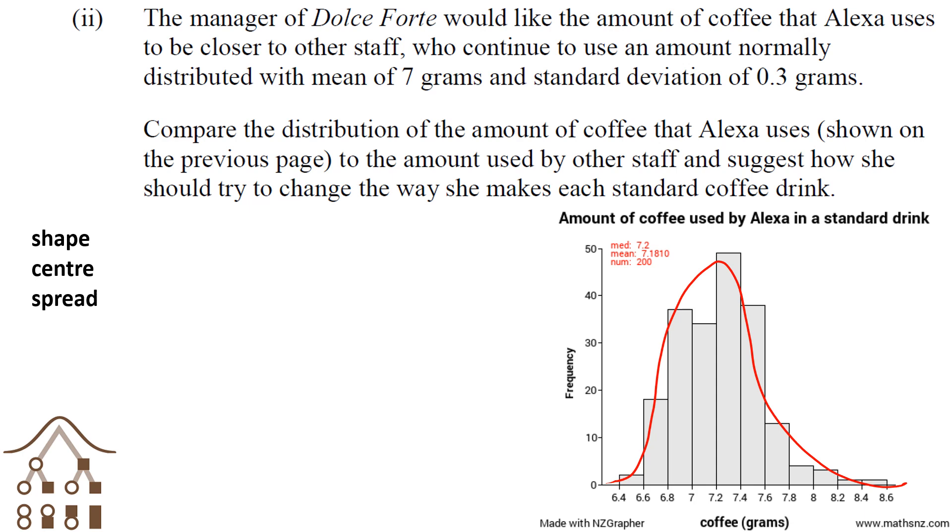When we talk about the shape, the other staff's coffee isn't skewed because it's normally distributed—it's a symmetrical graph. So Alexa's coffee is slightly right-skewed compared to the rest of the staff. Every now and then she makes coffee with way too much coffee.